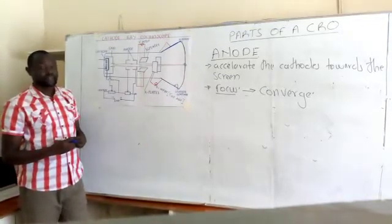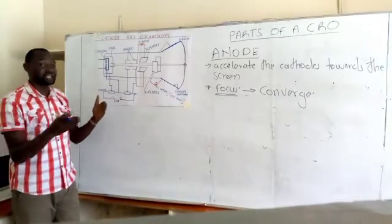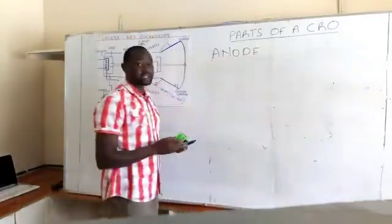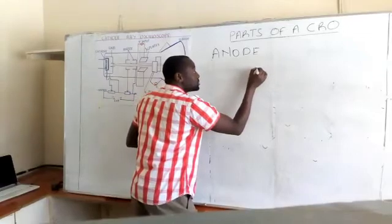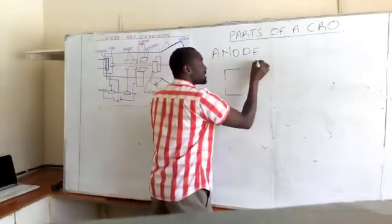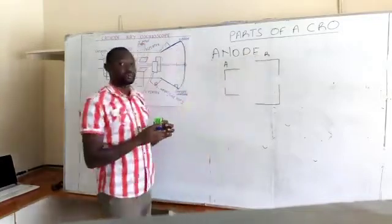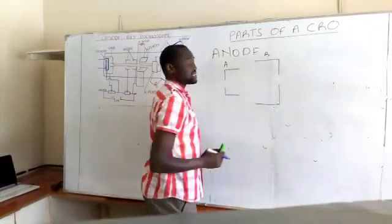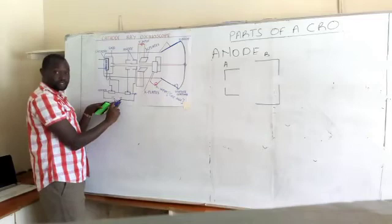So the anode is able to accelerate the cathode rays because it is at a very high positive potential. Now let's look at how the anode manages to focus or converge the cathode rays. Looking at the anode, it has two parts: there is this plate here — this is the first part of the anode — and there is a second plate. Let's call this A and that B. A is the part closer to the cathode and B is the part closer to the screen. The anode is connected to the positive of the EHT.